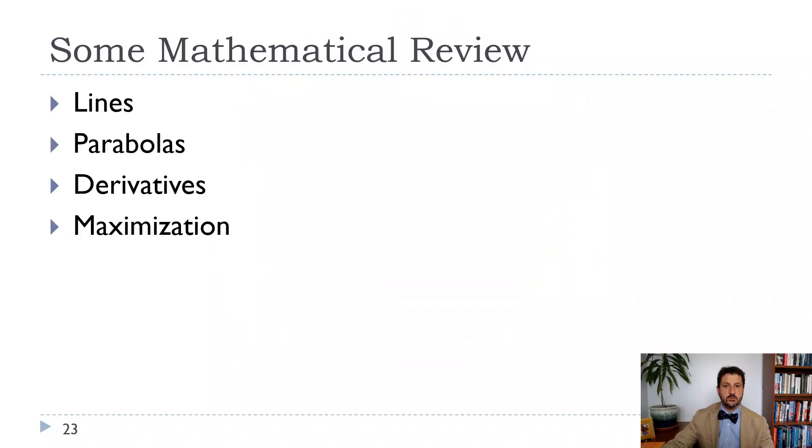Welcome back. This is the last video for chapter one for industrial organization, and we're going to go through some mathematical review that will be useful as we go through the models. The math in IO can be a little tricky. The book I use is not super mathematical, so we're not going to have to do too much. We're going to talk about four things in this video: lines, parabolas, derivatives, and maximization.